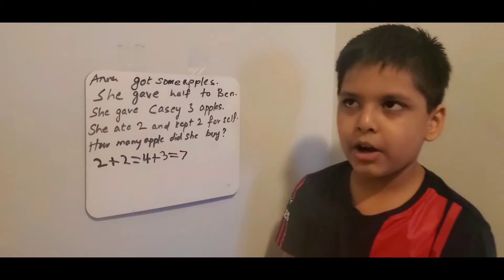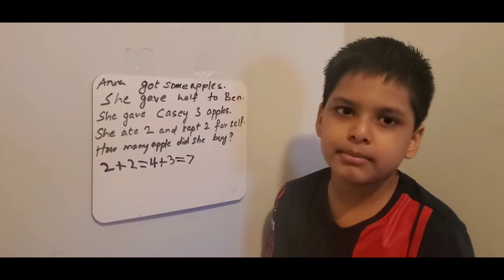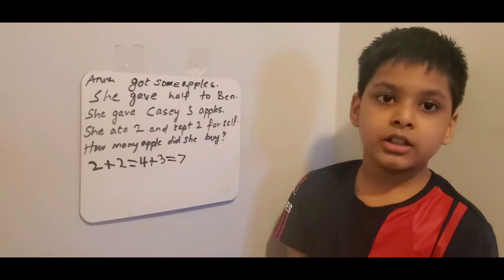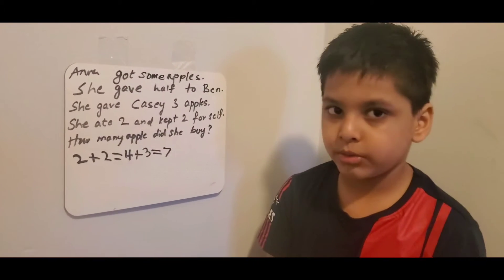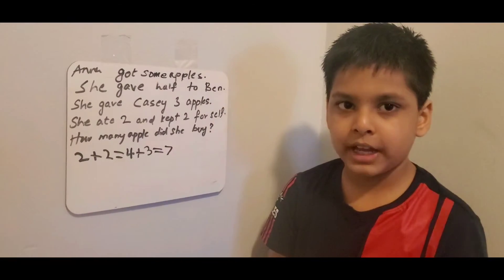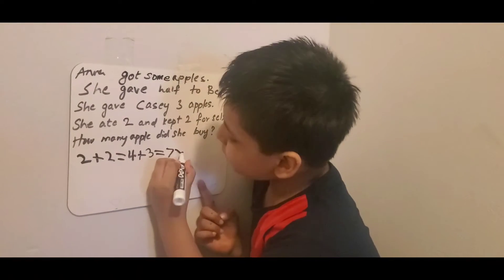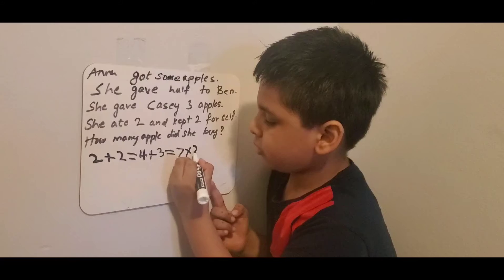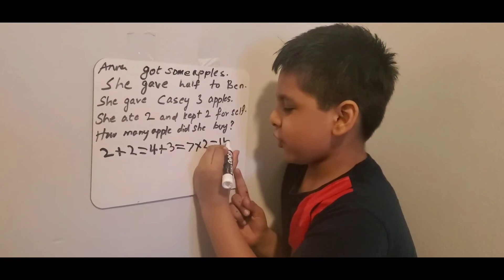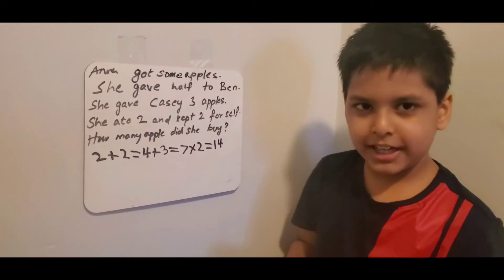And now, she gave half to Ben, that means divide by two. We should do the reverse of that, that means we should multiply by two. Now we get 14. 14 is the answer.